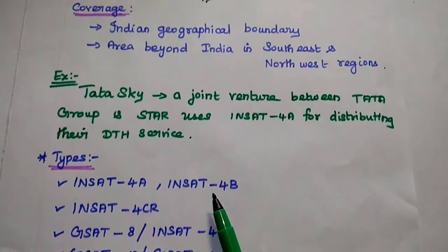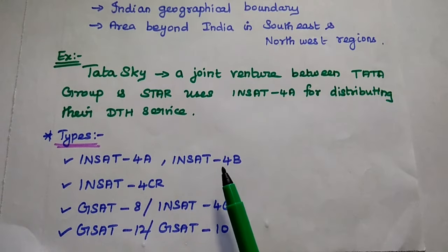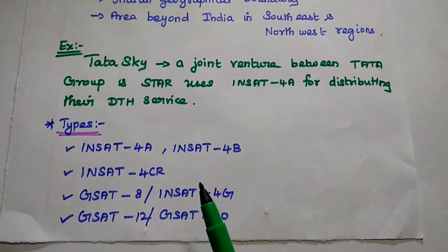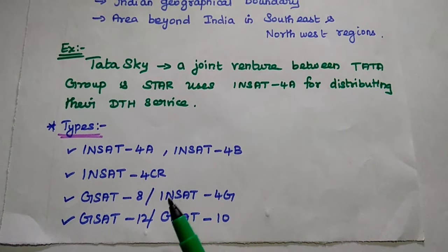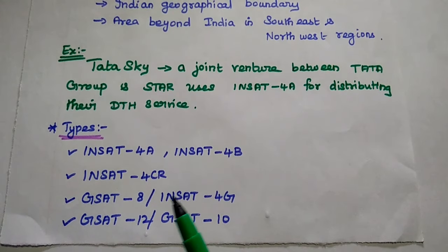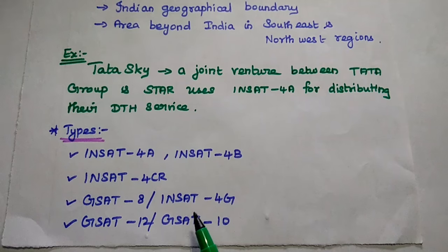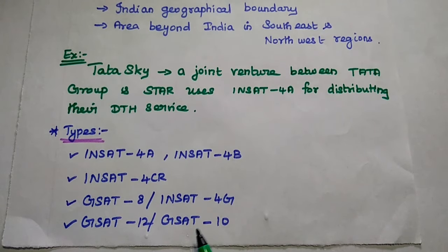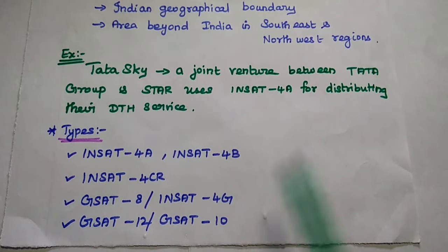There are different types in the INSAT-4 series: INSAT-4A, 4B, 4CR, GSAT-8 (also known as INSAT-4G), and GSAT-12 (also known as GSAT-10).